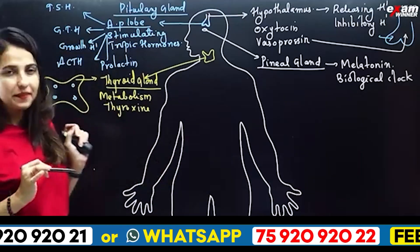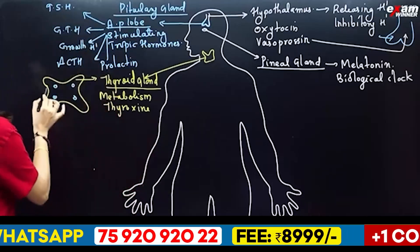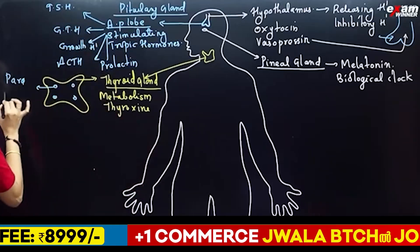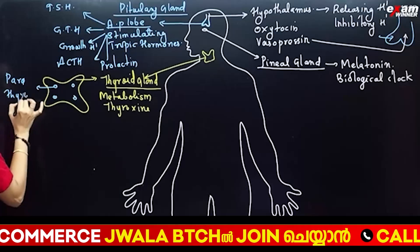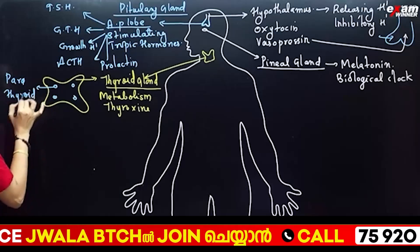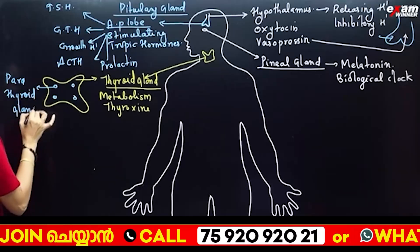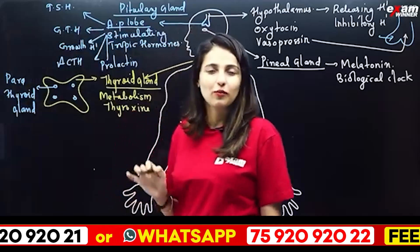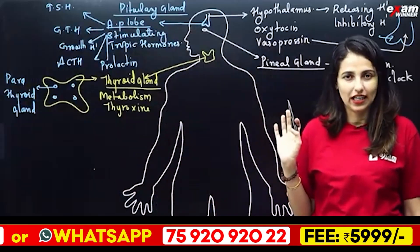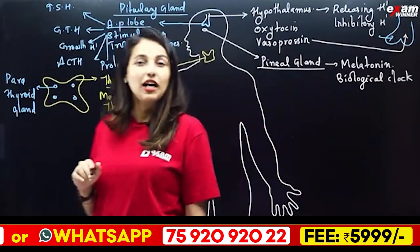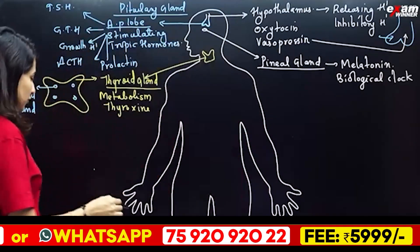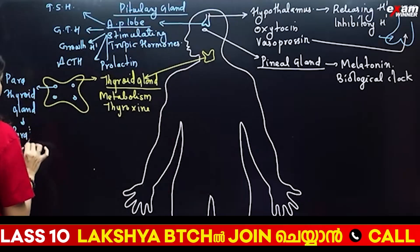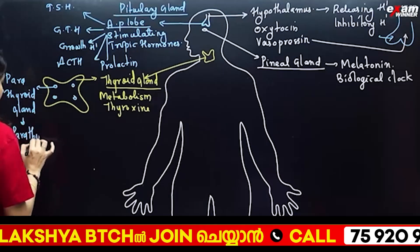Two pairs are the parathyroid glands. The parathyroid gland is involved in calcium metabolism. Its hormone is called parathormone, and calcium metabolism is its main function.